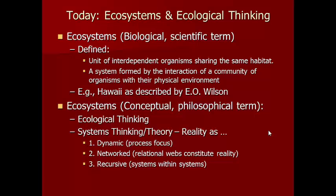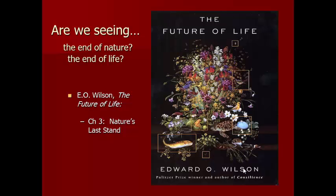The third point is recursivity — systems within systems. A recursive system is one where there are systems within systems. Within an individual person you have the cardiac system, the immune system, the digestive system, and those systems have components like tissues, which are made up of cells. Reality is not flat — there are pieces within things, and we'll talk through this as we go.